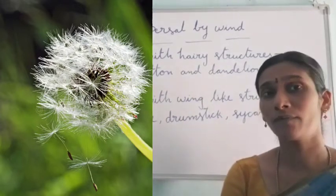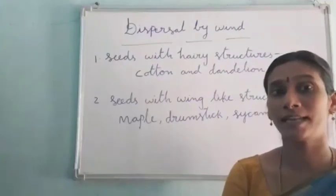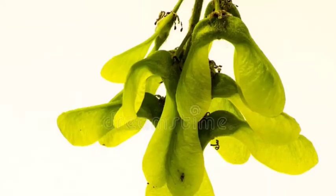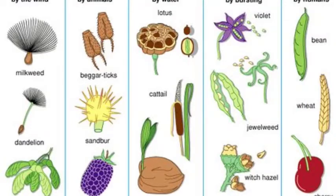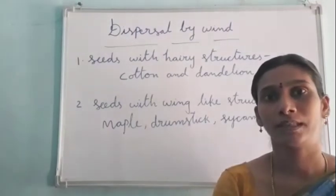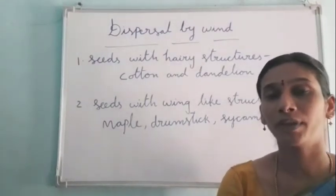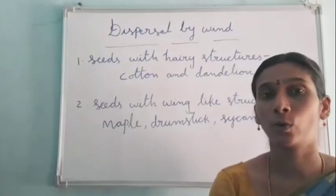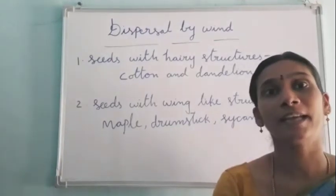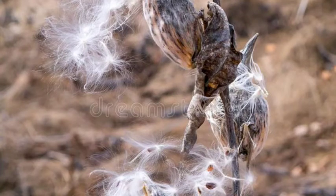Next, some seeds have wing-like structures. Seeds such as maple, drumstick and sycamore have wing-like structures. Because of these wing-like structures, they can rotate in the air and are carried by the wind, dispersing into distant places.